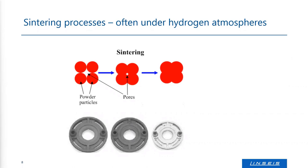Sintering is a process where you heat up the sample. At the beginning you have a sample called a green body. You heat it up and the density of the sample increases. In the middle part, it's the so-called black body. At the end of the sintering process, you have the final product. This sintering, especially for metals, is often done in hydrogen atmospheres.